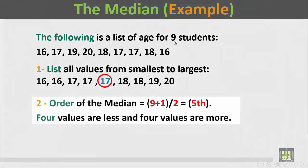We have n, the number of students, 9, which is odd. The order of the median will be n plus 1 divided by 2. That's to say 9 plus 1 divided by 2. So the order of the median will be the fifth. The fifth value: 1, 2, 3, 4, 5. The fifth value is equal to 17.